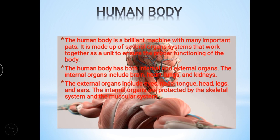It is made up of several organ systems that work together as a unit to ensure the proper functioning of the body. Our body is like a machine and has different types of parts. Each part has a specific function, and we have several organ systems.